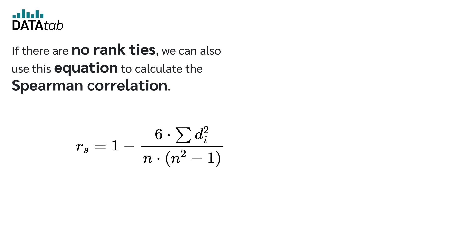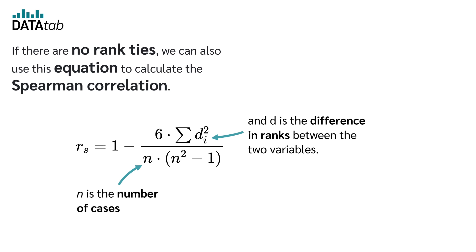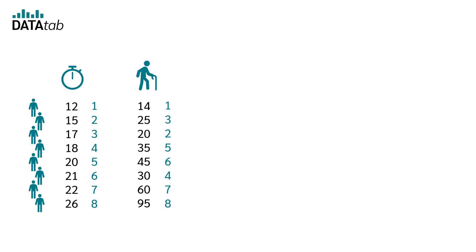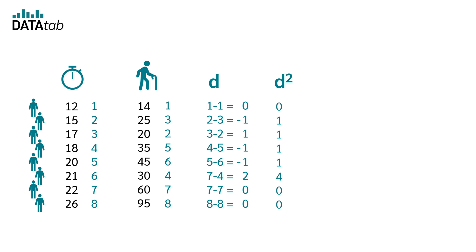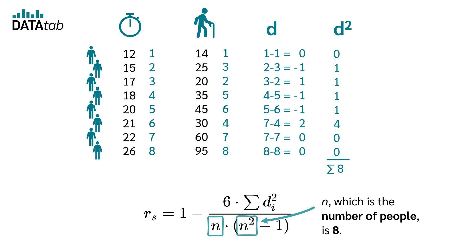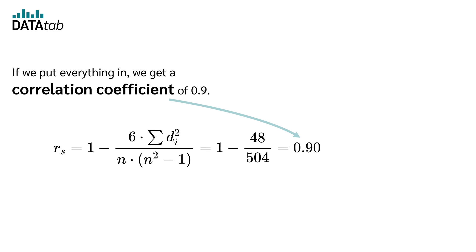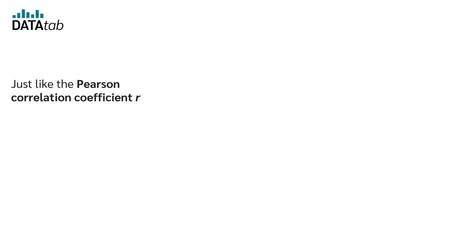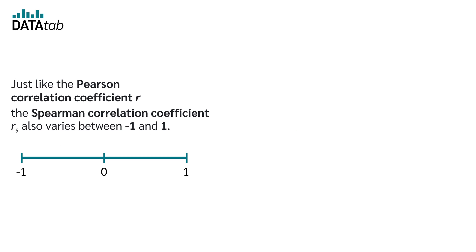If there are no rank ties, we can also use a simplified equation to calculate the Spearman correlation, where RS is the Spearman correlation, N is the number of cases, and D is the difference in ranks between the two variables. In our example, we calculate each D: 1 minus 1 equals 0, 2 minus 3 equals minus 1, 3 minus 2 equals 1, and so on. We square the individual Ds and sum them up: the sum of D-squared is 8, and N is 8. Plugging everything in gives a correlation coefficient of 0.9. Like r, RS varies between minus 1 and 1.